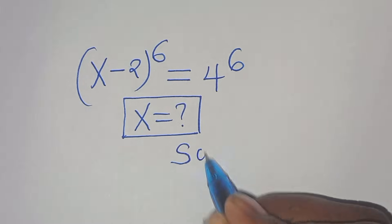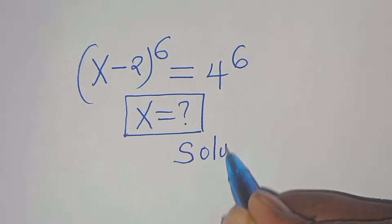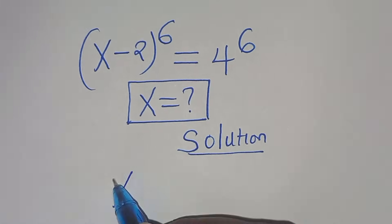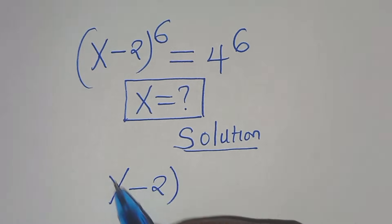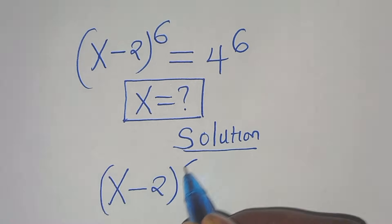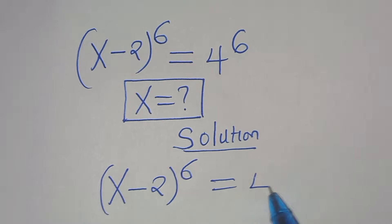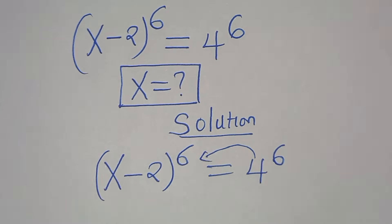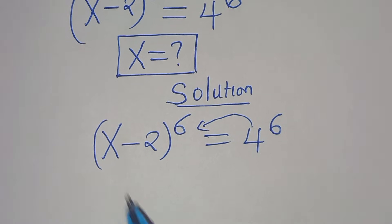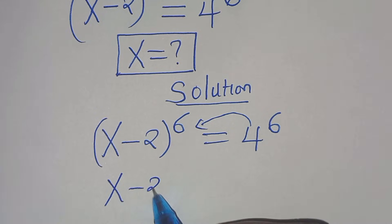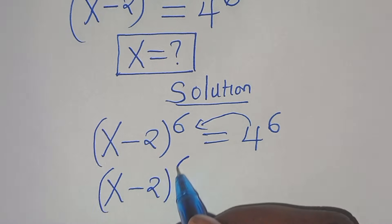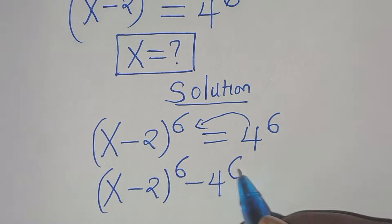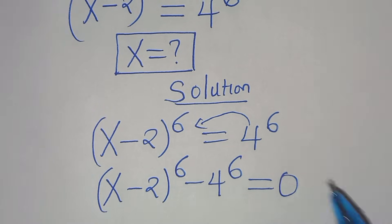So let's provide a solution from here. We have x minus 2 to the power of 6, this is equal to 4 to the power of 6. So let's have x minus 2 to the power of 6 subtract 4 to the power of 6. This is equal to 0.